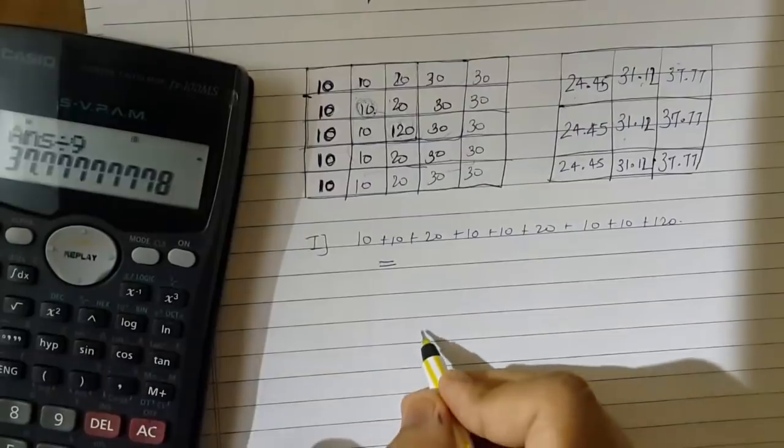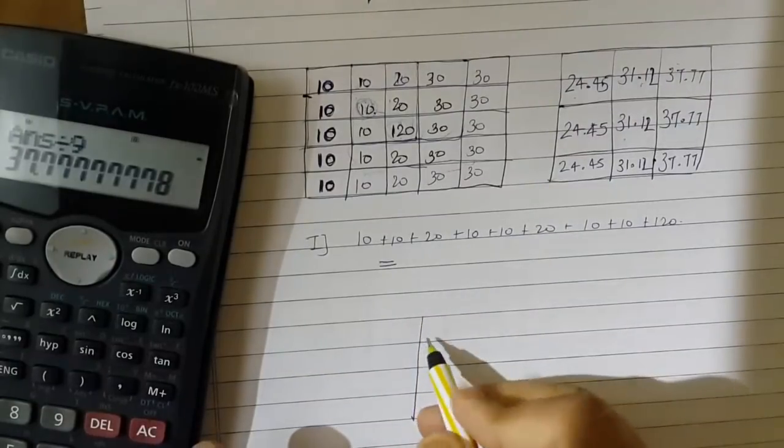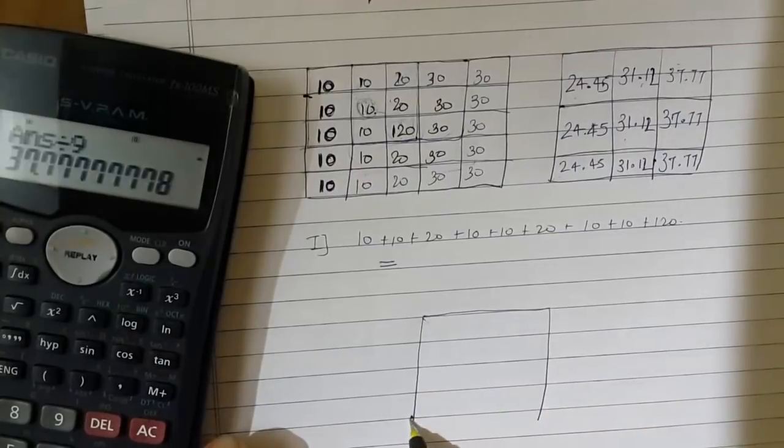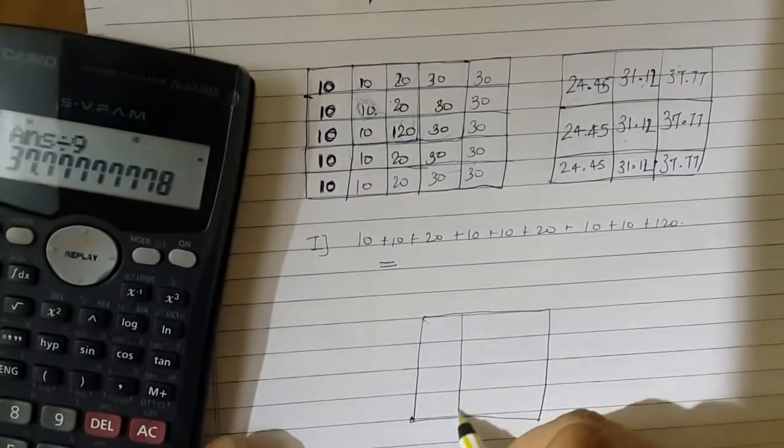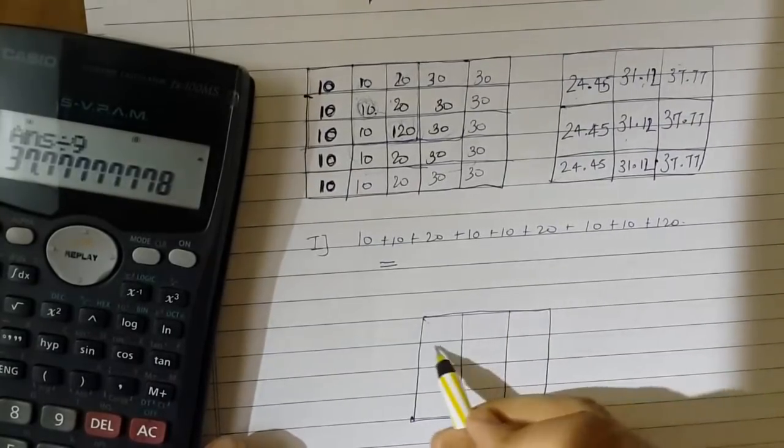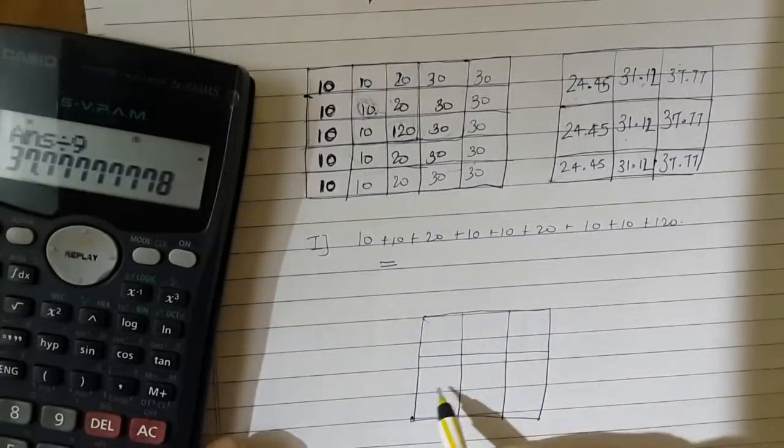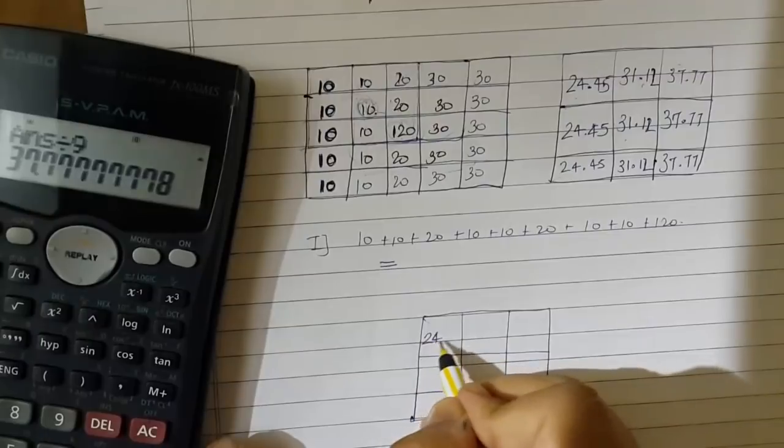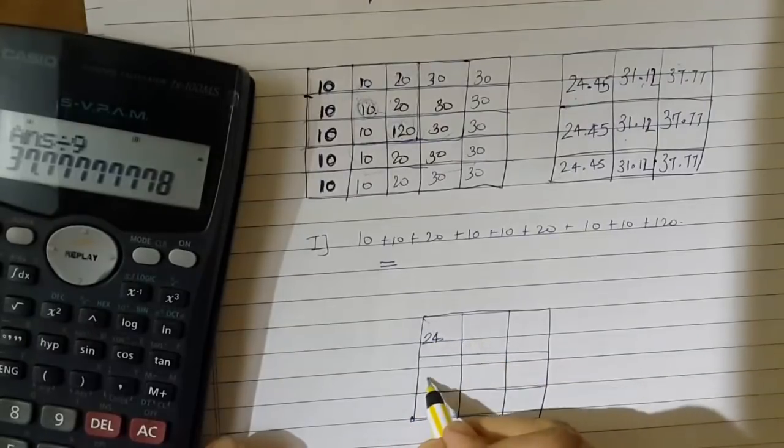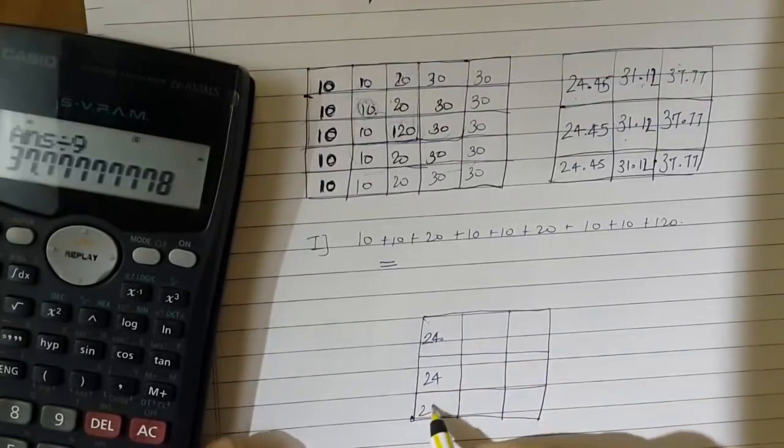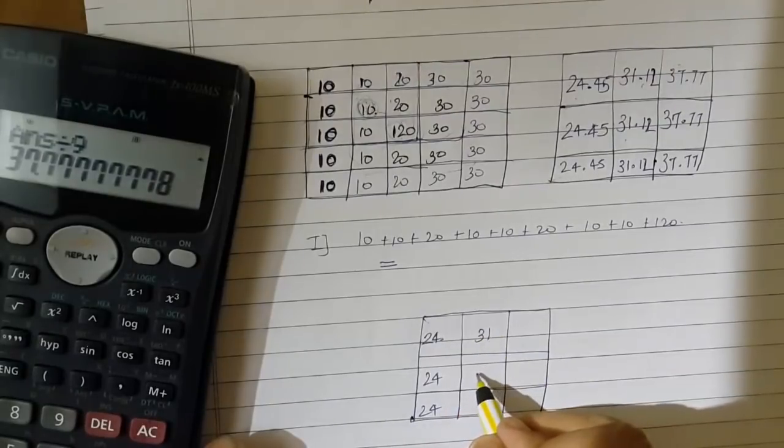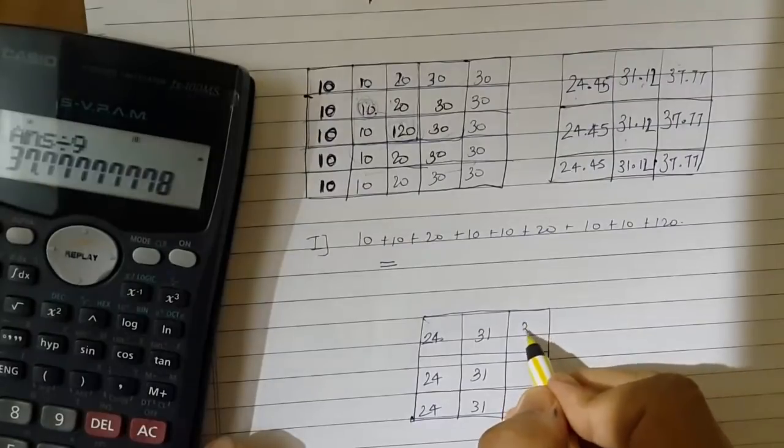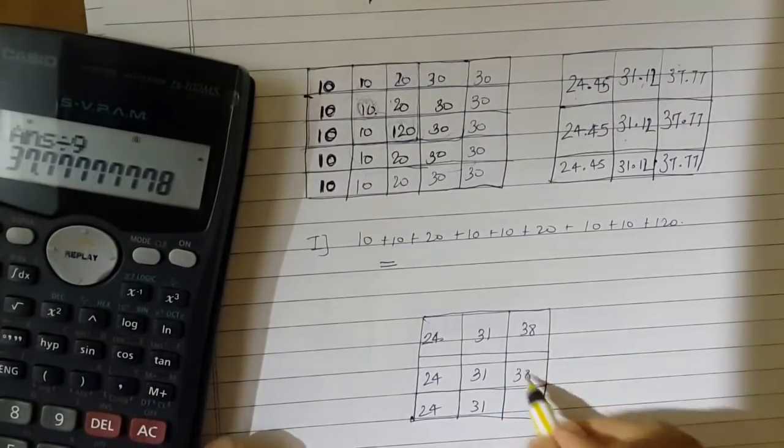Now just ignoring the decimals, I will show you how the image will look after low pass filtering, the supposedly smoothed image. Ignoring 24.45 to just 24, 31.12 to 31, and this one to 38 and 38.